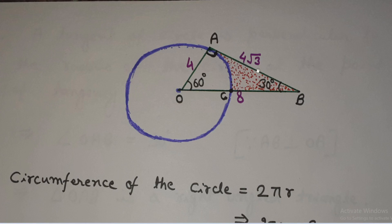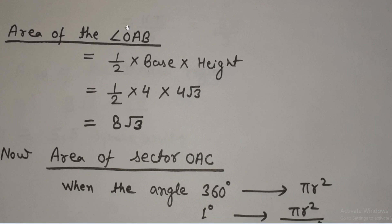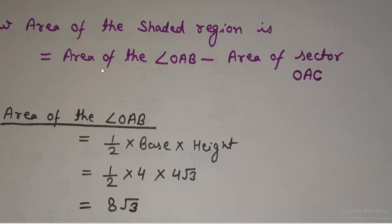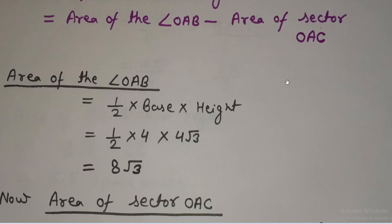Now we know all three sides of this triangle, but we need only OA and AB to calculate the area of this right-angled triangle. Area of a triangle is half × base × height. Taking AB as base and OA as height: area = ½ × 4√3 × 4 = 8√3. So the area of triangle OAB is 8√3 square units. The area of the shaded region is the area of triangle OAB minus the area of the sector of the circle.